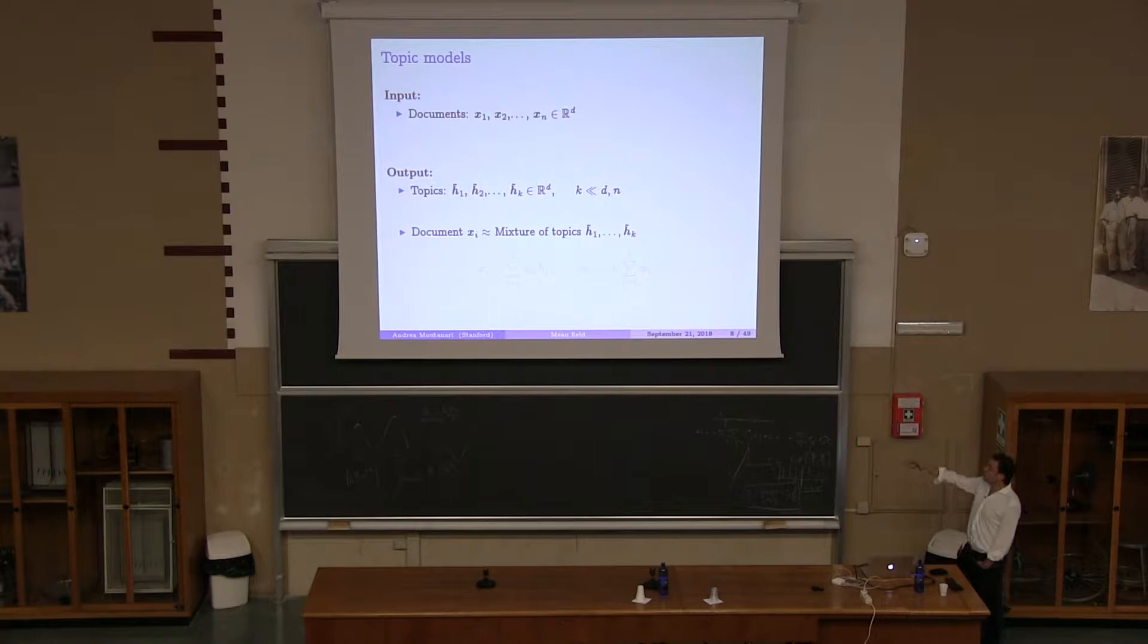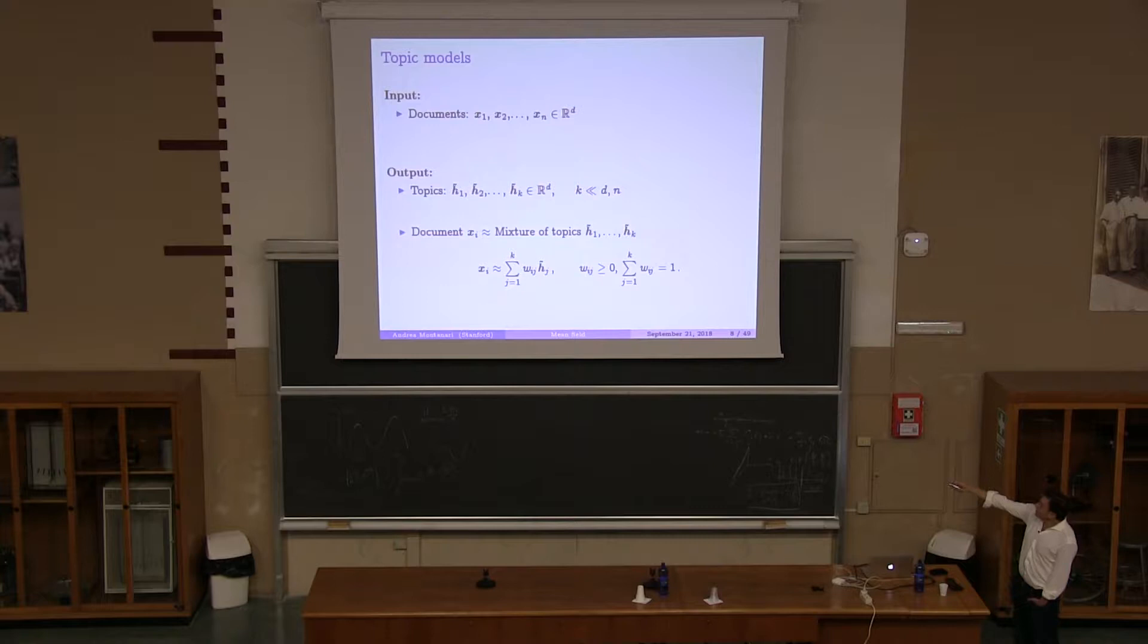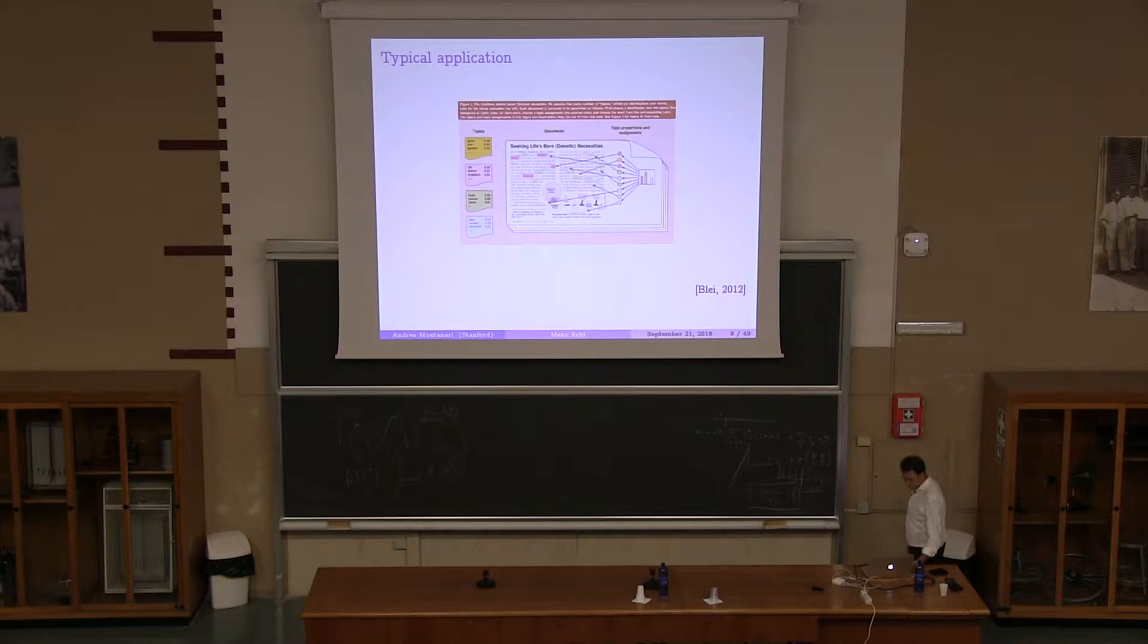And then what you think of is that each document, you want to express it as a mixture of topics. So each of the vectors, xi, you want to write it as a combination of these vectors, h tilde 1 to h tilde k. And what I mean by a mixture, I mean a convex combination. This is the dominant thing. So you write xi as a sum over j of wj h tilde j, where the wj are weight vectors. So they are non-negative, and summed over j, they add up to 1.